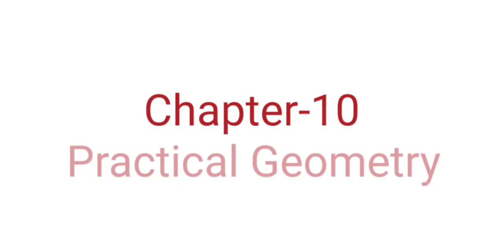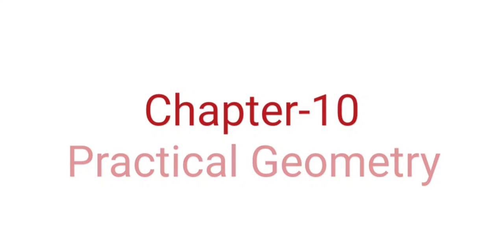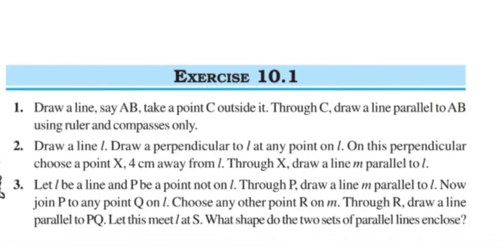Hello scholars, today I am going to start Chapter 10: Practical Geometry. In this chapter we will learn how to draw parallel lines and some types of triangles. First, see Exercise 10.1, Question 1: Draw a line AB, take a point C outside it, through C draw a line parallel to AB using ruler and compasses only. For this question we have to use ruler and compass.